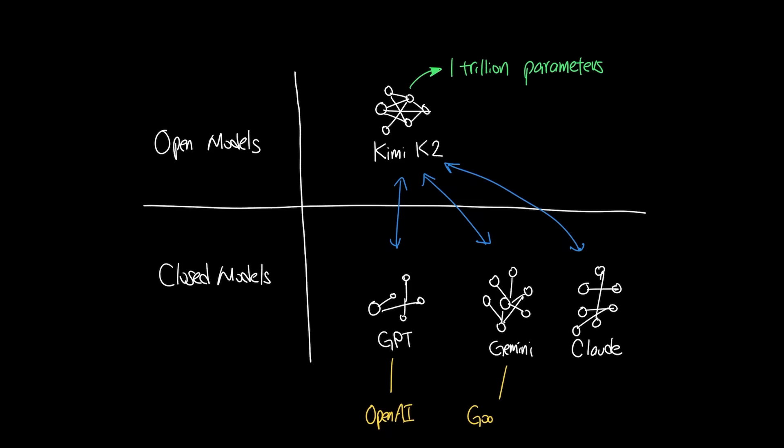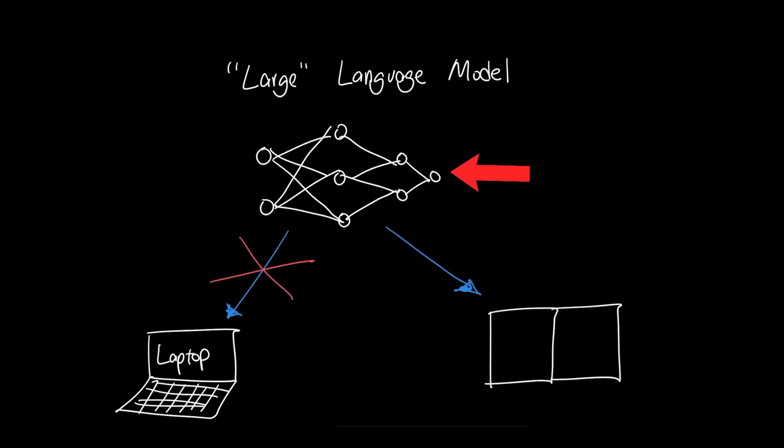The competitive edge that these models have over Kimi K2 is economies of scale. What I mean by that is that to run a trillion parameter model for millions of users, you need a large-scale infrastructure to support it.